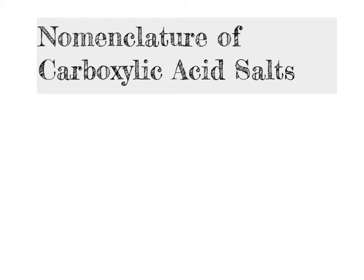In the last video, we looked at the rules for naming carboxylic acids — molecules that have a COOH group in them. In this video, what we're going to explore is how we go about naming molecules that are so-called carboxylic acid salts, where a salt is defined as a molecule that contains a cation and an anion.